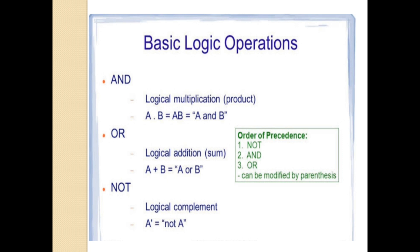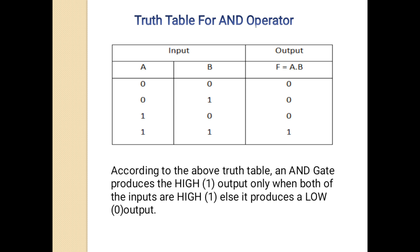The AND operator is a binary operator, so it needs at least two operands. It operates with two or more operands and is used to perform logical multiplication. The symbol for the AND operator is a dot, so we find the product of the values of the given operands. The OR operator is also a binary operator — it operates with two or more operands and is used to perform logical addition, using the plus symbol. The NOT operator is a unary operator because it operates on a single operand, and is used to perform the logical complement.